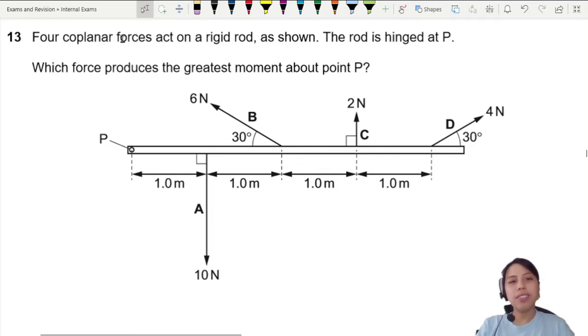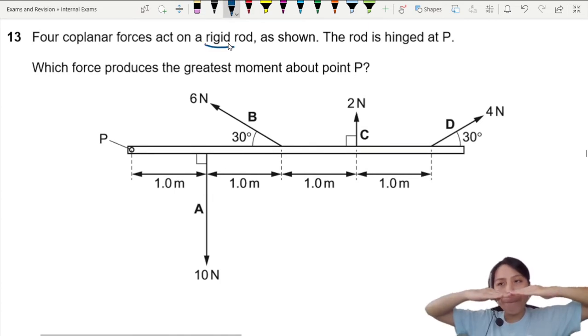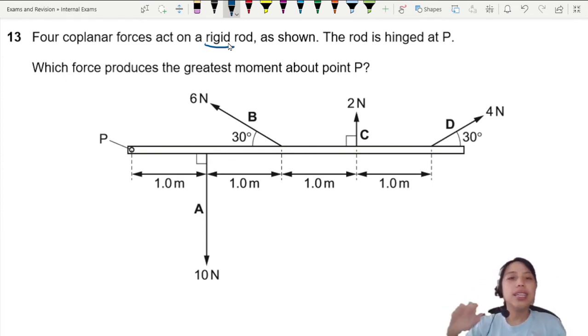Four coplanar forces act on a rigid rod. A rigid rod means this rod here is not going to bend and do some deformation thing. No, no, no. It's just straight. The rod is hinged at P. Which force produced the greatest moment about point P?